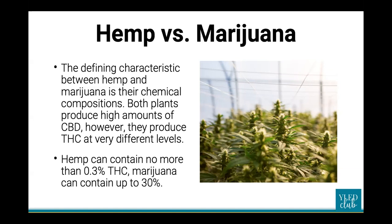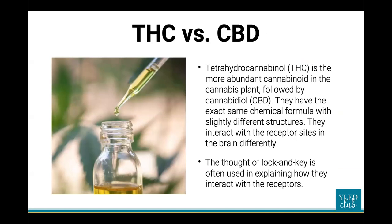Marijuana plants produce THC oil, marijuana oil, and cannabis oil, and are primarily used recreationally. The plant itself is shorter and bush-like, with more leaves and buds surrounding the plant's body. It requires intensive care in an isolated warm and humid environment.